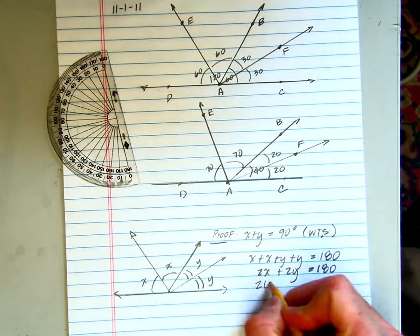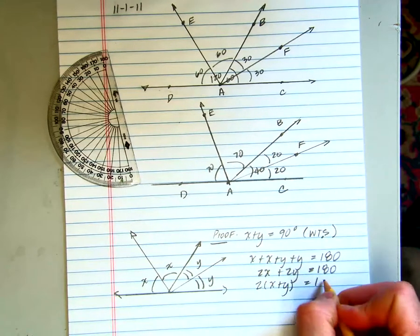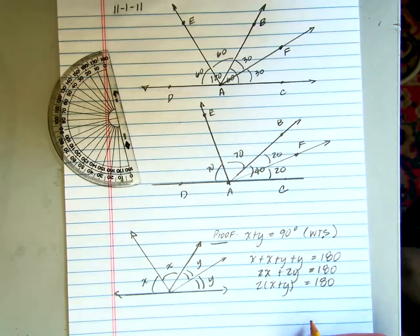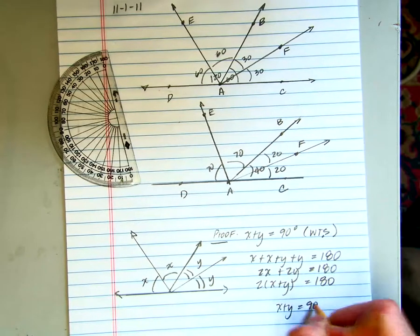If I can factor out the 2 here, I get 2 times the quantity x plus y equals 180. And then, going ahead and dividing by 2, I get x plus y is equal to 90.